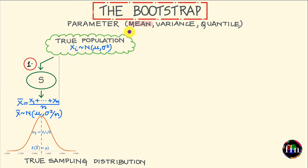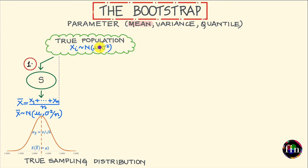To arrive at these statistical properties, let us start off with a theoretical approach — one which relies on statistical theory. For this purpose, let us make the assumption that our population follows the normal distribution. This means the raw values in our population are normally distributed with mean mu and variance sigma squared. To estimate the population mean, let me draw out from this population a sample of size n.